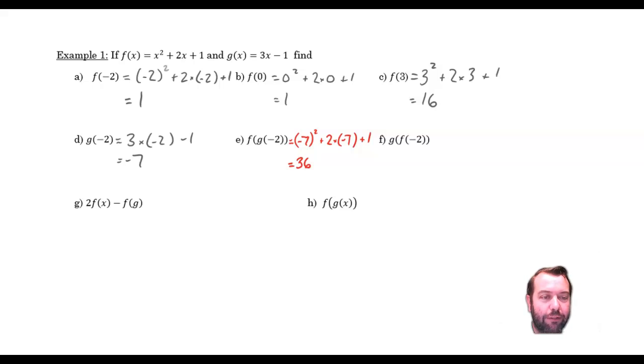Now, the g of the f of negative 2. We're changing the order around. Will this be the same? We'll have a look. The function of negative 2 we've already seen was 1, right? Back here, right at the beginning. Now, the g of 1 will be 3 times 1 minus 1. Equals 2. Not 36 at all. Quite different.